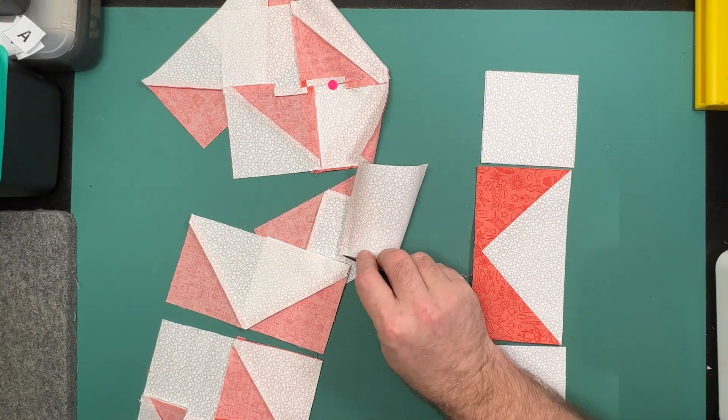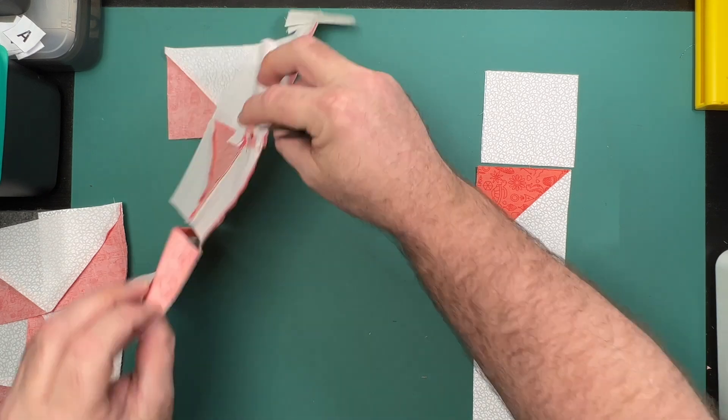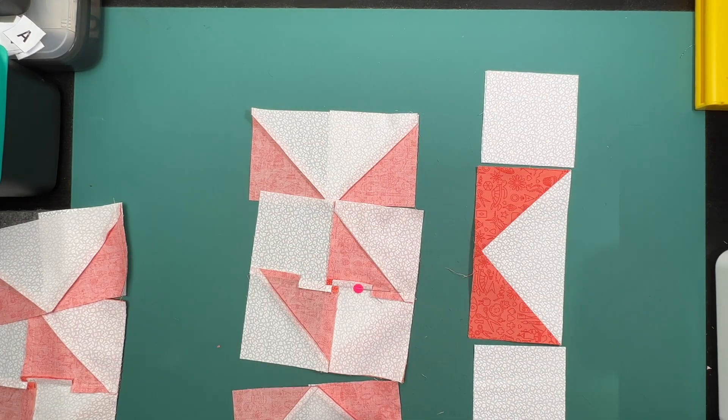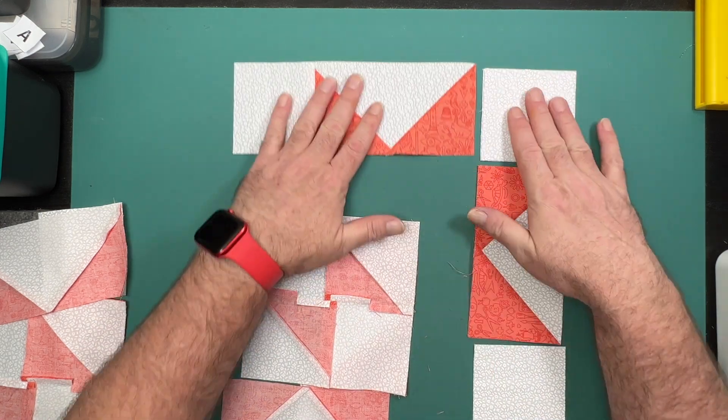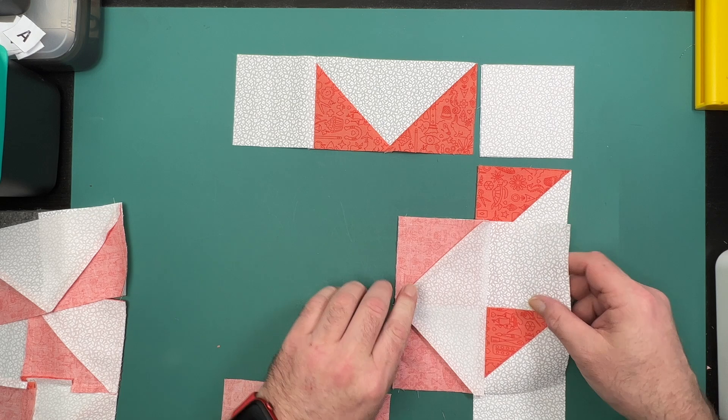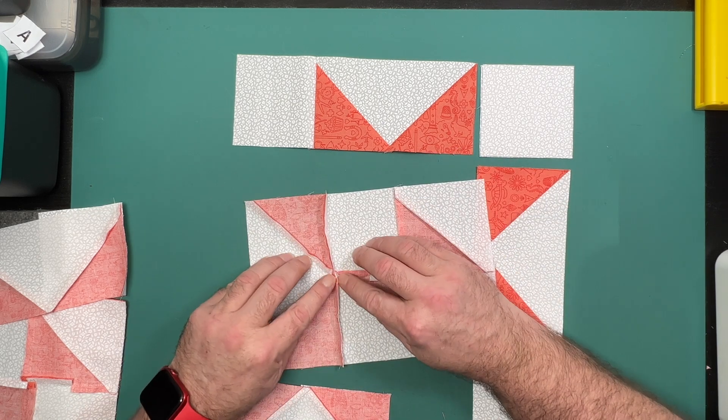With the first of our vertical seams now sewn, we'll just give this a quick finger press before attaching that final row on the top and the bottom. We are going to press out towards the solid square, and in the middle, much as we did last week, we're going to press that seam open.